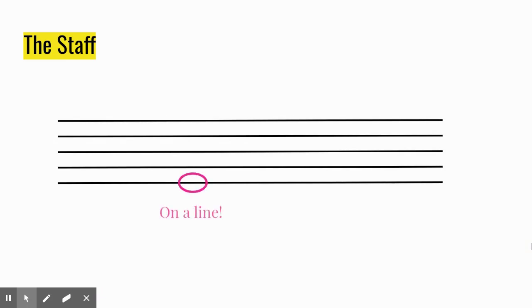Notes can appear on a line, with the staff line going through the circle part of the note, known as the note head, and notes can appear in a space, with the space going through the note head. We read music left to right, like when we're reading English.